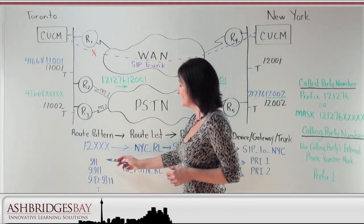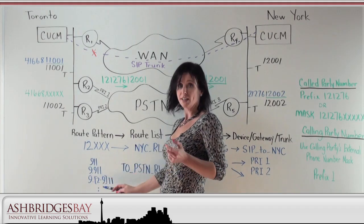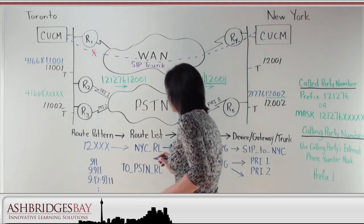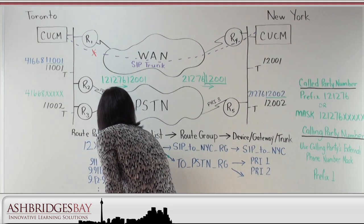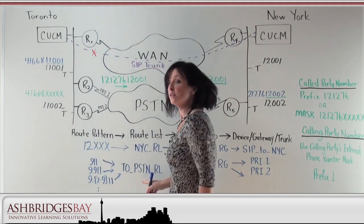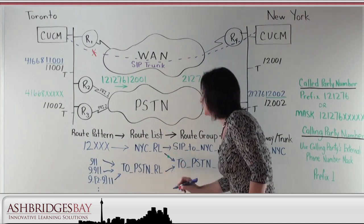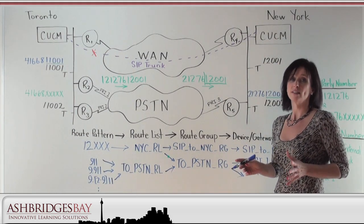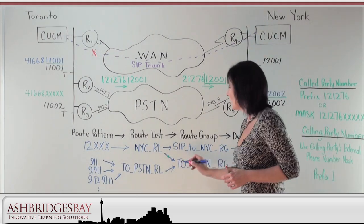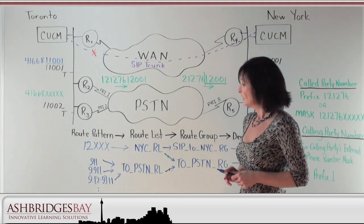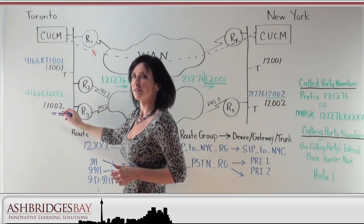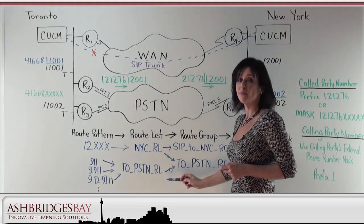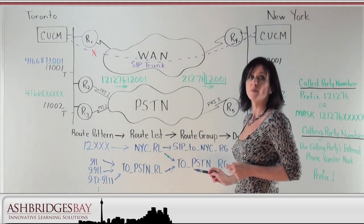Remember we configured those patterns 9-1-1, 9-9-1-1-9-2 to 9-1-1 and so on? Well, we want to route those calls, so we're going to point them to the Toronto PSTN route list. This route list is also going to go through the Toronto PSTN route group. Now for digit manipulation here, we're going to go to the discard digits drop-down box and we're going to choose 'discard pre-dot.' That way when we make a call from this phone, we match a pattern, it comes through this route list, and before it's routed through the PSTN, we discard the 9.